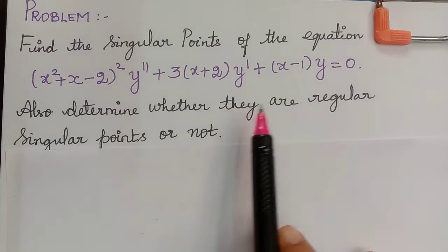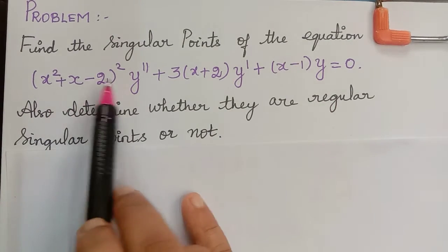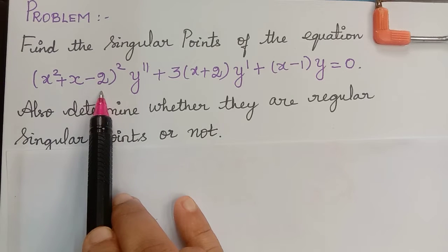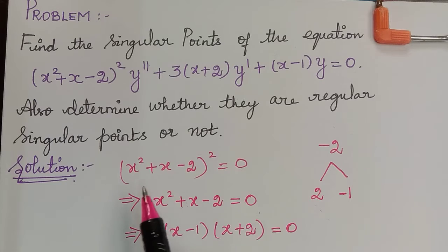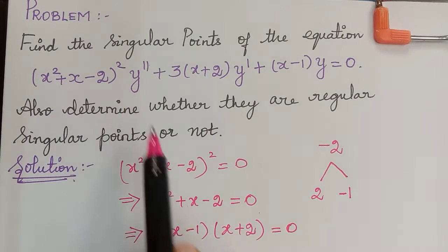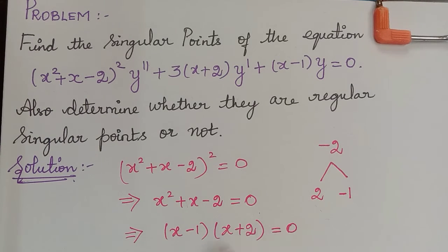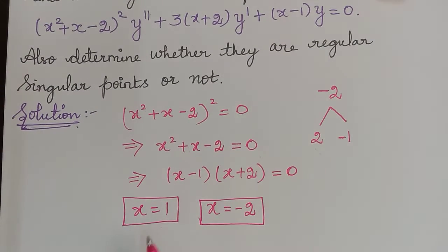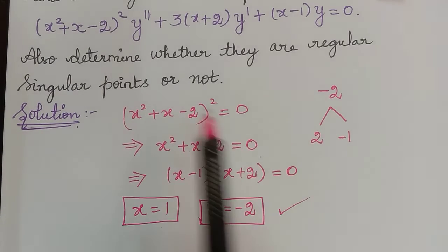In order to find the singular points of this given equation, first of all we have to equate the coefficient of y double dash to be equal to 0. So what we obtain is (x² + x - 2)² = 0, from which x² + x - 2 = 0. This can be factorized as (x - 1)(x + 2) = 0, and therefore the singular points are x = 1 and x = -2.